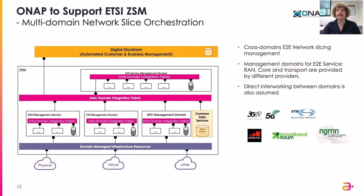Regarding ONAP support, the key use case currently being implemented is end-to-end network slicing, which has several domains: RAN management domain, core network management domain, and NFV management domain for interconnection between virtualization. It may also include a transport management domain. ETSI ZSM defines how transport is interfaced with RAN and core, and how the whole end-to-end thing works. The interconnection fabric between those different domains is actually being implemented by ONAP by leveraging ETSI ZSM standards.